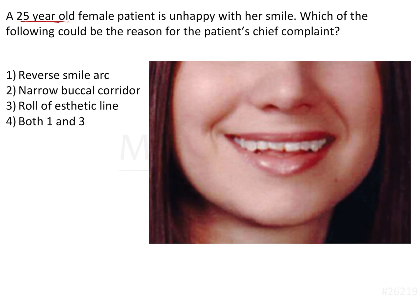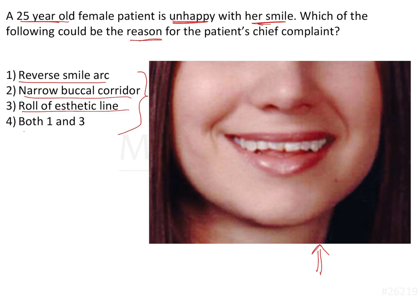A 25-year-old female patient is unhappy with her smile. Which of the following could be the reason for the patient's chief complaint? Is it because the patient has a reverse smile arc, a narrow buccal corridor, a roll of the aesthetic line, or both options one and three?